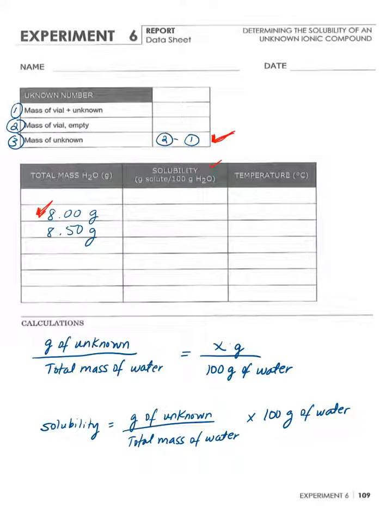If you have 100 grams of water, how much of that specific unknown can be soluble at that temperature? It's a ratio: the grams of your unknown, which is what you have in number three, divided by the total mass of water.